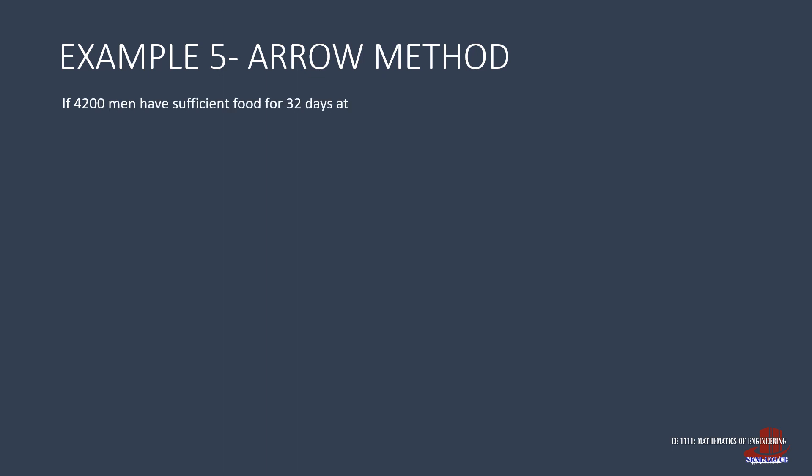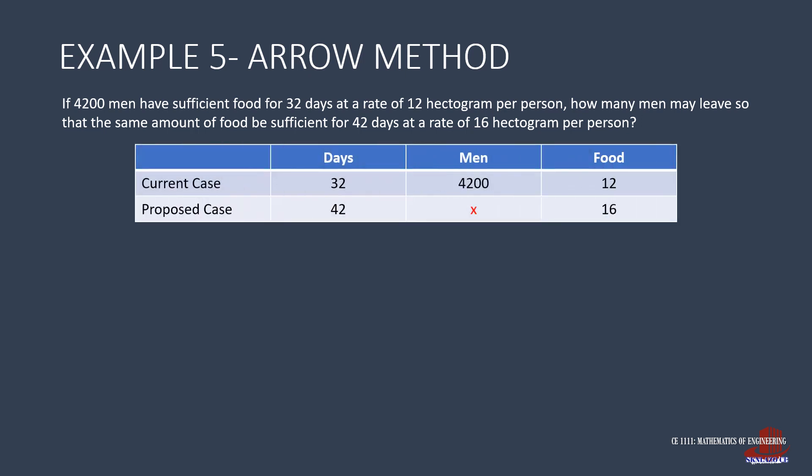Example 5 states: If 4,200 men have sufficient food for 32 days at a rate of 12 hectogram per person, how many men may leave so that the same amount of food be sufficient for 42 days at a rate of 16 hectogram per person? The quantities are days, men, and food.